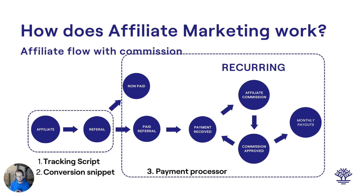The tracking script basically adds a cookie to the end user's device whenever they click an affiliate link. The conversion snippet sends us the email of the person actually signing up to your tool. It's not an actual conversion yet — it's a sign-up — so it's not actually delivering any money right away.